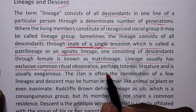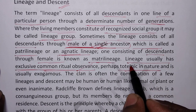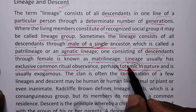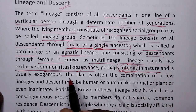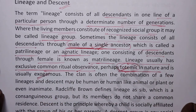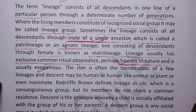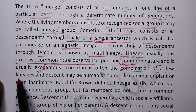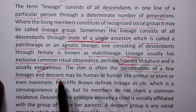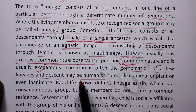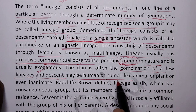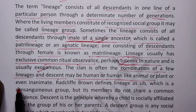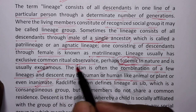Lineage usually has exclusive common ritual observance, perhaps totemic in nature — totemism we have studied in the Durkheim chapter — and is usually exogamous. The clan is often a combination of a few lineages. Descent may be human or human-like, animal or plant, or even inanimate.